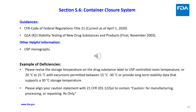Section S.6 guidances: CFR Code of Federal Regulations Title 21; Q1A(R2) Stability Testing of New Drug Substances and Products; and USP monographs. Examples of deficiencies: please revise the storage temperature on the drug substance label to either controlled room temperature, or 20°C to 25°C with excursions permitted between 15°C to 30°C, or provide long-term stability data that supports a 30°C storage temperature. Please align your caution statement with 21 CFR 201.122(a) to contain a caution for manufacturing, processing, or repacking — Rx only.